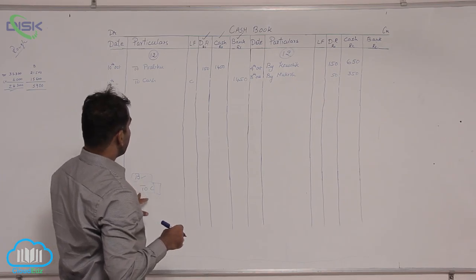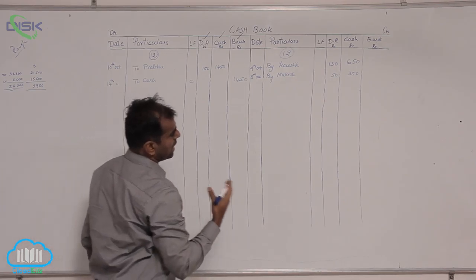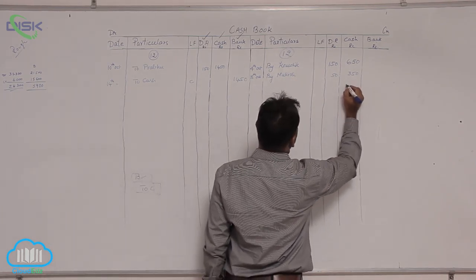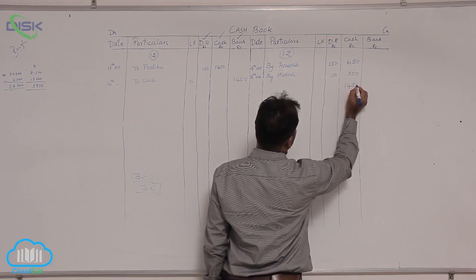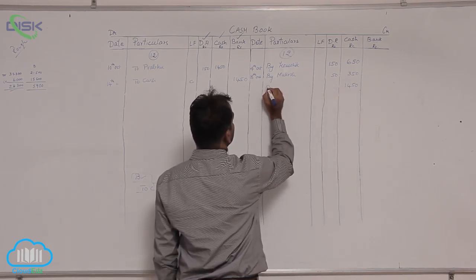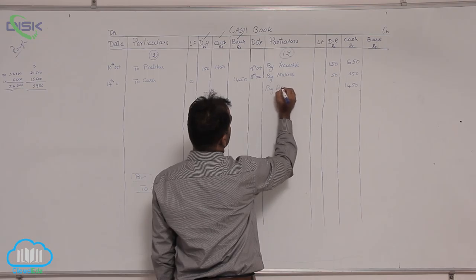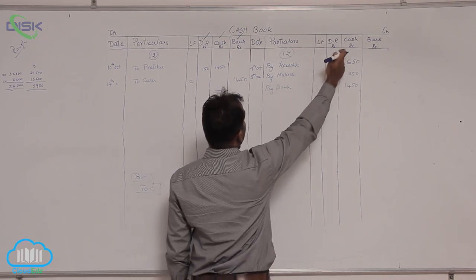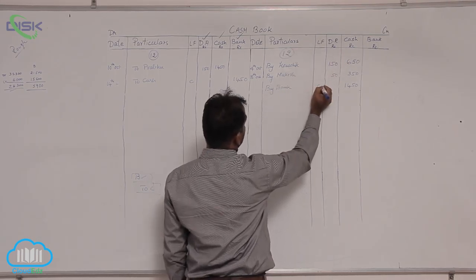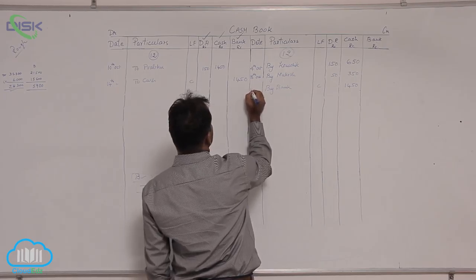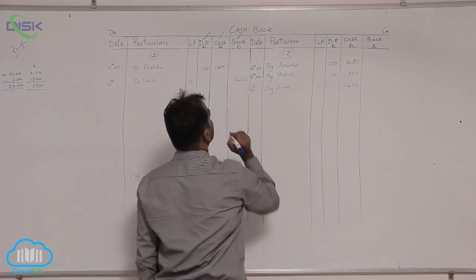Similarly cash has to be credited, so on the credit side enter the amount 1450 in cash column and by bank you will mention, so when cash and bank are involved its contra, so the date being 14th October.